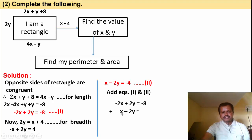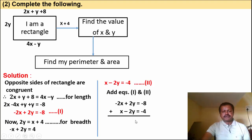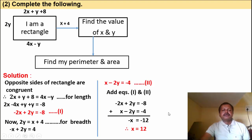Plus x minus 2y equals minus 4. Adding: minus 2x plus x gives minus x; 2y minus 2y cancels; minus 8 minus 4 gives minus 12. So minus x equals minus 12, therefore x is equal to 12.